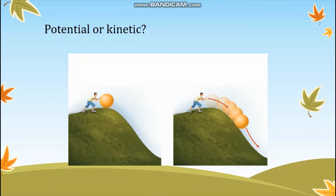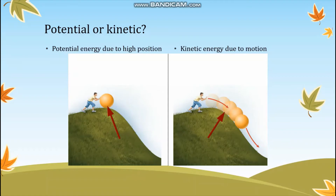In the next example, you have to decide which one has potential or kinetic energy. In the first picture, a boy is holding a ball in a high place — does this have potential or kinetic energy? In the next picture, the ball is rolling downwards — does it have potential or kinetic energy? The answer is: when the ball is in a high position it has potential energy, and once motion has started there is kinetic energy due to its motion.